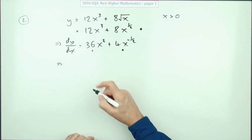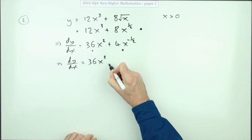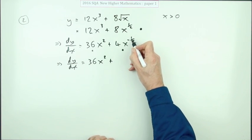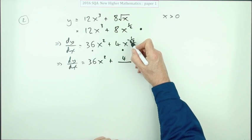So I think I'll go back to dy/dx equals 36x squared plus... x to the negative a half means the four isn't affected by that, but power negative a half - negative means it's underneath and a half means it's the root.